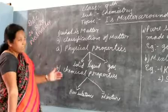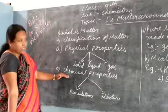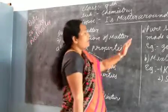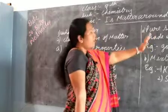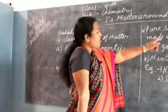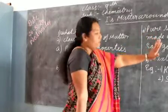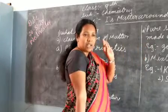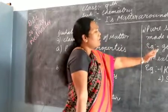Now let us understand the chemical properties. The first chemical property is pure substance. Pure substance is one which is made up of only one kind of particle. For example, gold and water.